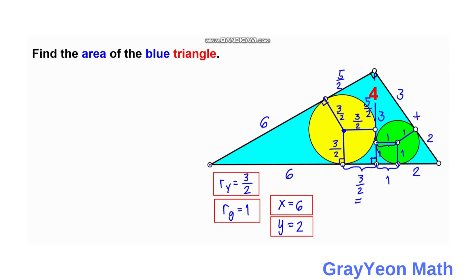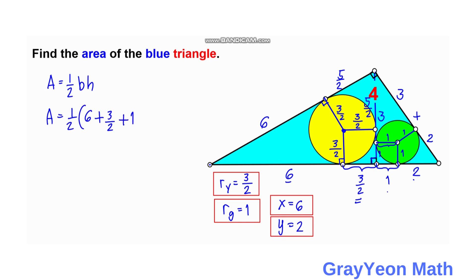Now we are ready to find the area. We have calculated all segments of the base: 6, 3/2, 1, and 2. The area is 1/2 × base × height = 1/2 × (6 + 3/2 + 1 + 2) × 4.